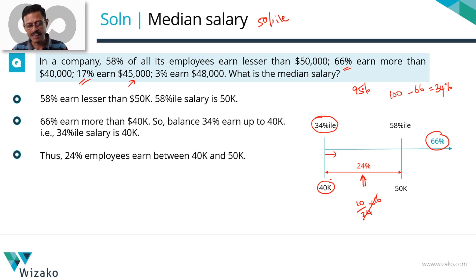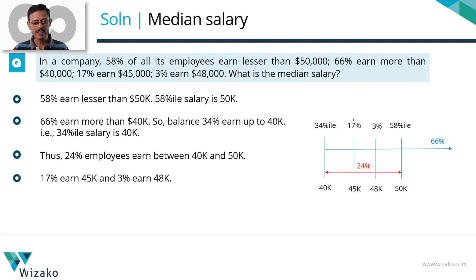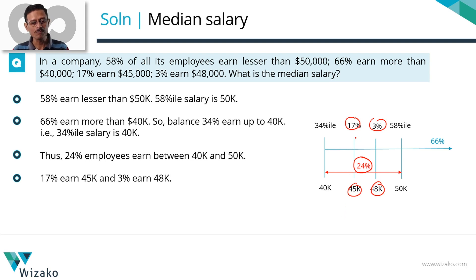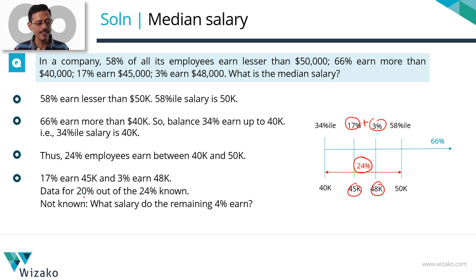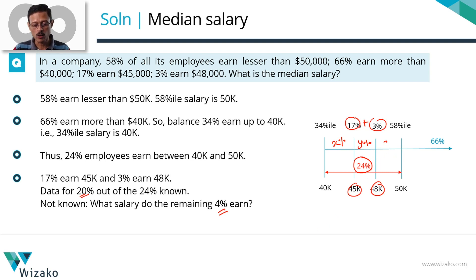Let's plot the remaining two pieces of information. We know the intervening gap has 24% employees. 17% earn $45K and 3% earn $48K. In the $40K to $50K interval, there are 24% employees, and we have exact numbers for 17 plus 3, which is 20%. We do not have data for the remaining 4%. Where could their salaries be? Their salaries could be anything between $40K and $45K — let's say X percent are there. Between $45K and $48K, let's say Y percent. And between $48K and $50K, let's say Z percent. This unknown 4% could be divided in these three intervals in any way.